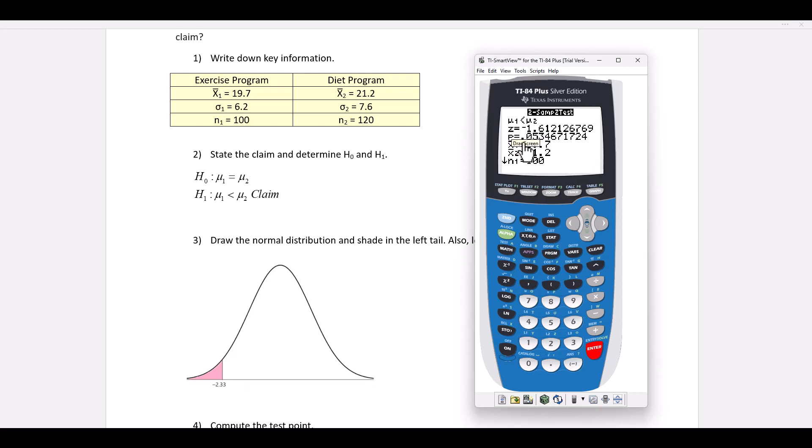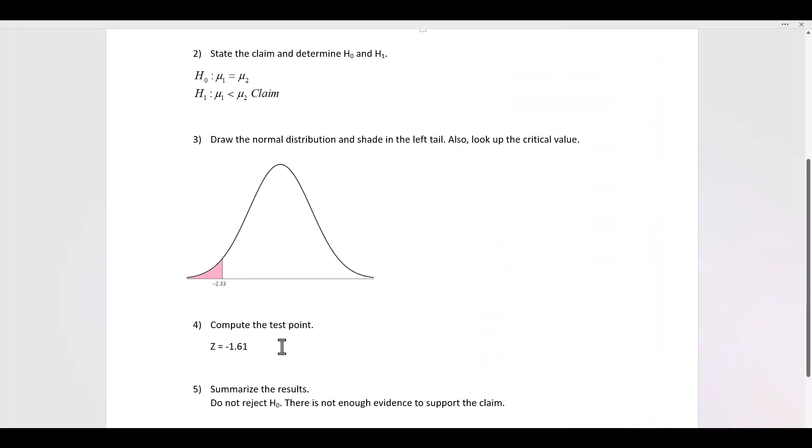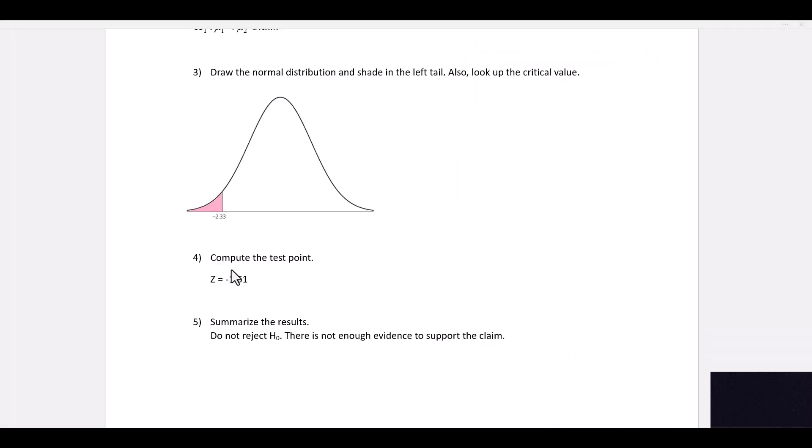We compare the test point to the critical value. The test point, negative 1.61, falls to the right of the critical value, which means it's in the non-critical region. Thus, when we summarize our results, we state the following: Do not reject H-naught. There is not enough evidence to support the claim. Thanks for watching the video.